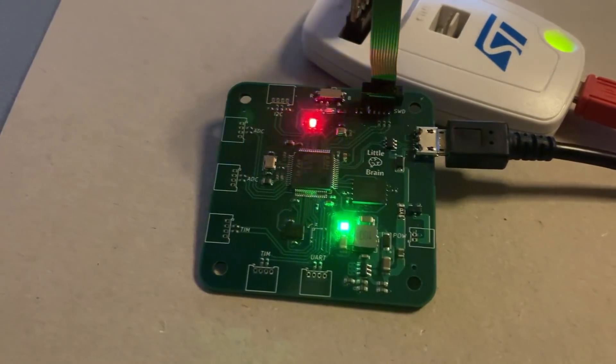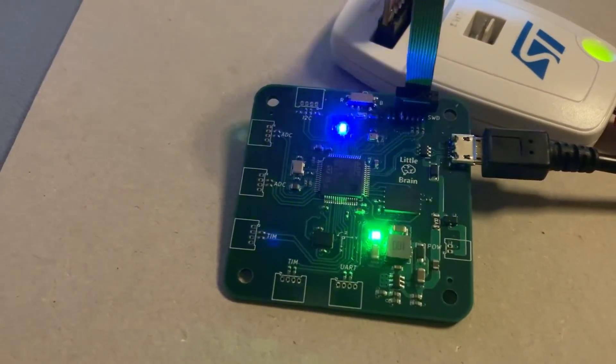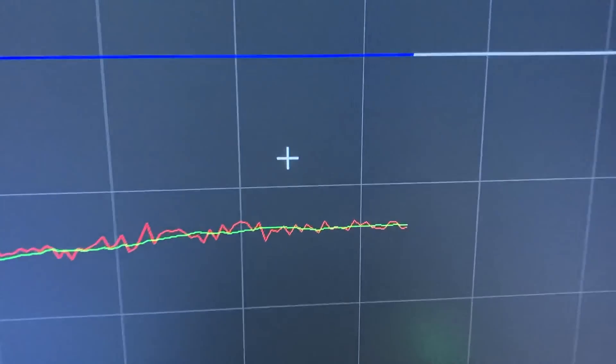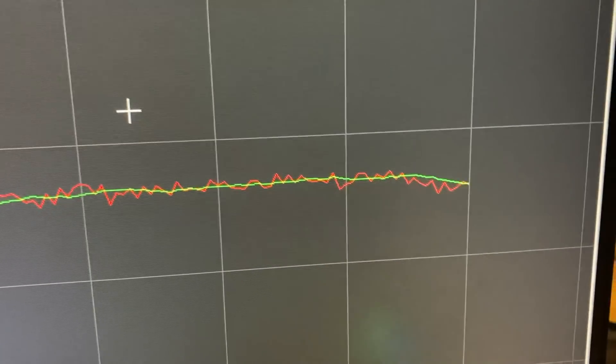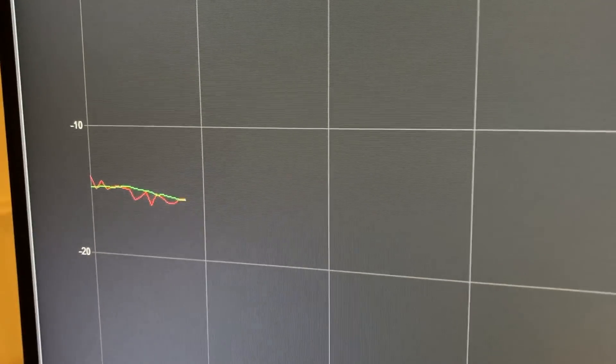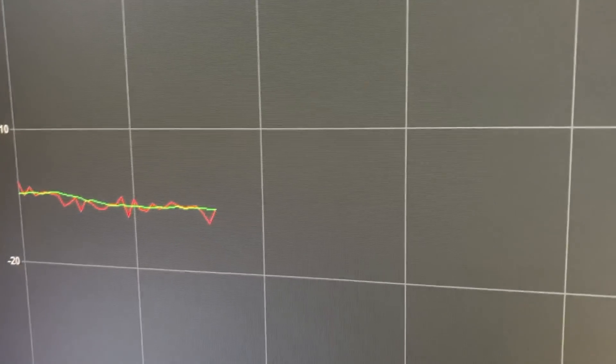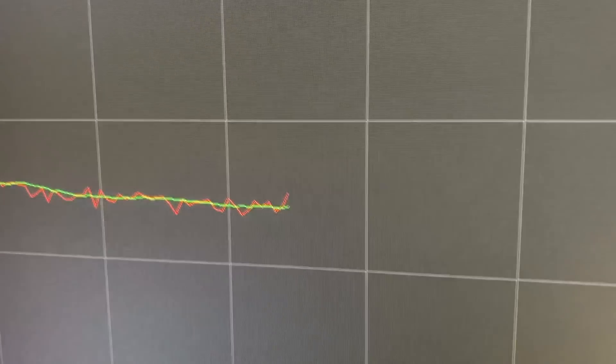So now I have the program with a moving average filter running on this little board over here. I'm using the serial oscilloscope to plot my data which is coming via the USB port. Now the red trace is the raw barometric pressure sensor data and the green trace is our 10-point moving average filter doing its thing which we've implemented as an FIR filter.